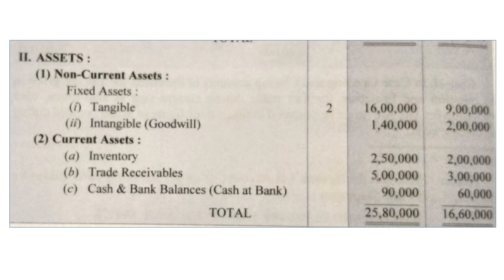Now move on to assets. Non-current assets — fixed assets — point one: tangible assets were rupees 9 lakhs last year and are now rupees 16 lakhs. Whenever tangible assets increase, it is assumed that more purchase activity has been done. In real life, when you buy anything, you pay an amount and receive what you bought — the same logic applies here.